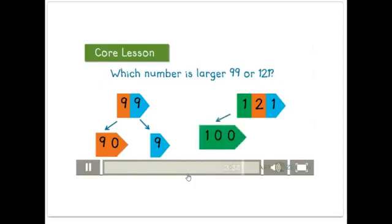In 121, the 1 is worth 100, the 2 is worth 20, and the 1 is worth 1. If we compare these numbers, we see that 121 is larger even though the digits are smaller because of the place of the numbers. The 1 is in the hundreds, and 100 is larger than 99.